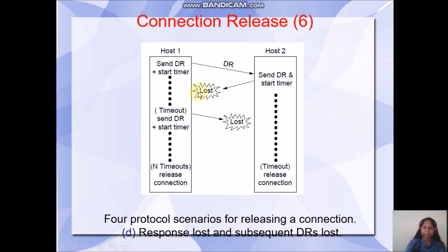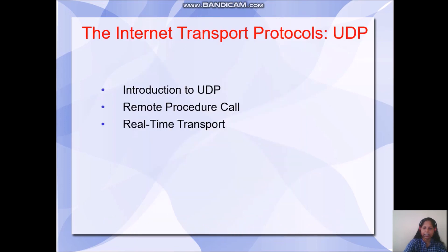There can also be a chance that subsequent disconnect requests are lost. In such a case, both will start a timer. Host2 will release the connection when the timeout occurs. Host1 will again resend the disconnect request, but subsequent DRs are lost. After N timeouts, host1 will release the connection — otherwise the connection would continue for a long time. This is the three-way handshake method of connection establishment and release.